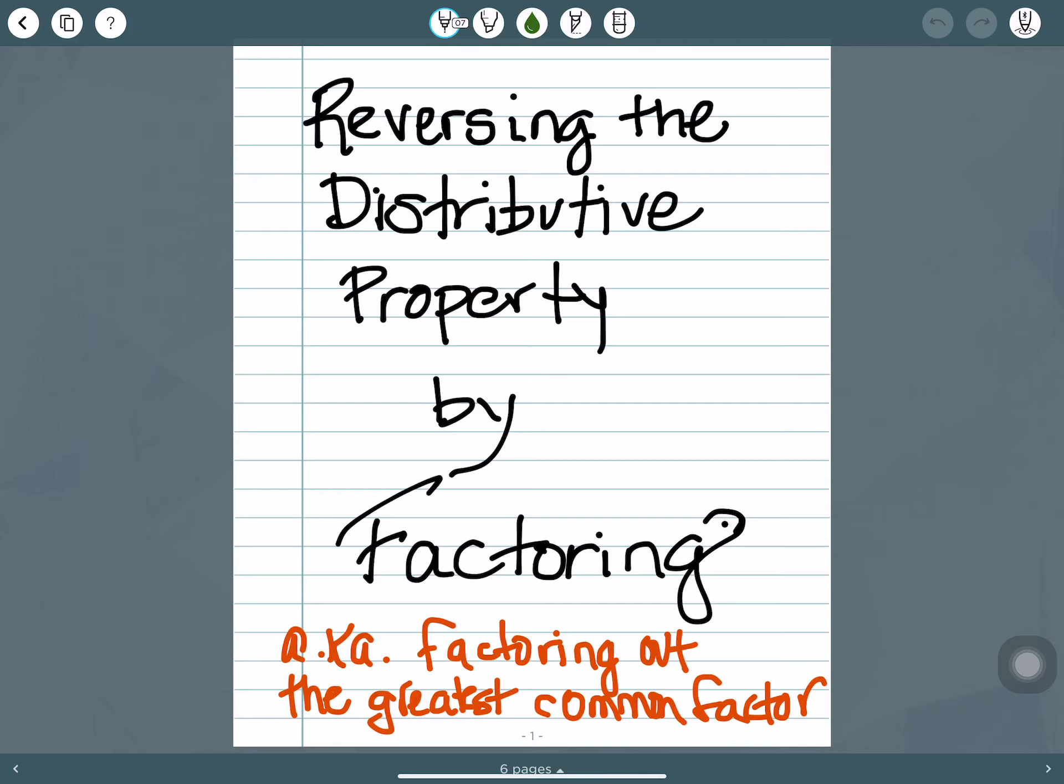This video is about reversing the distributive property by factoring, also known as factoring out the greatest common factor.